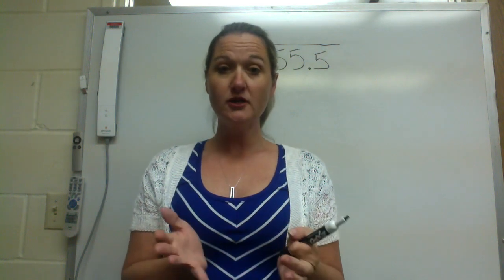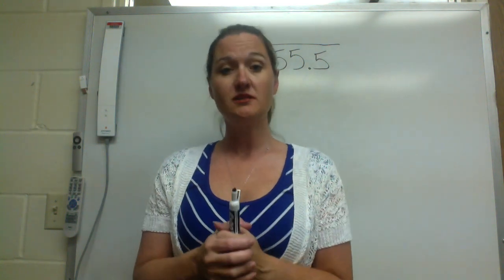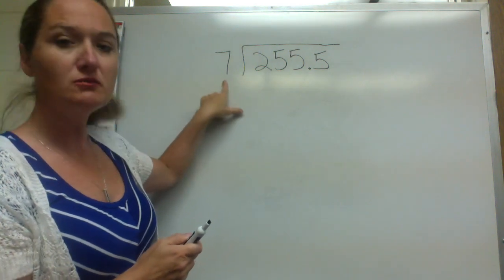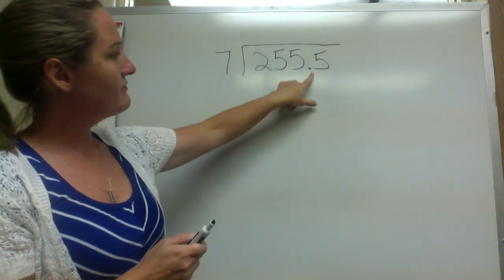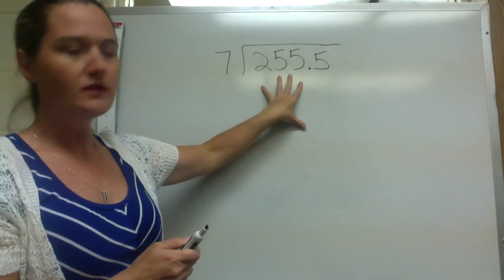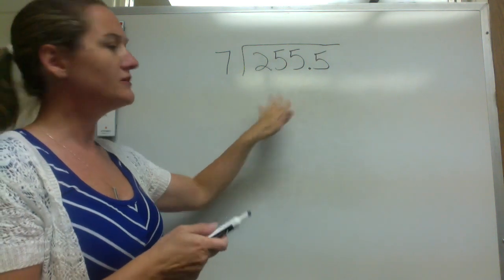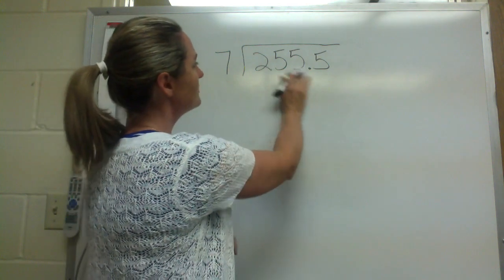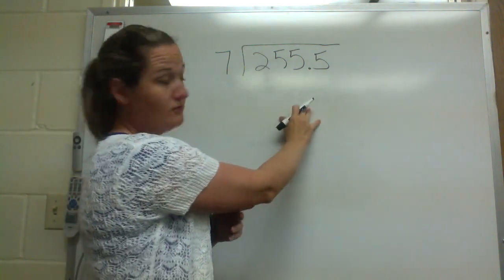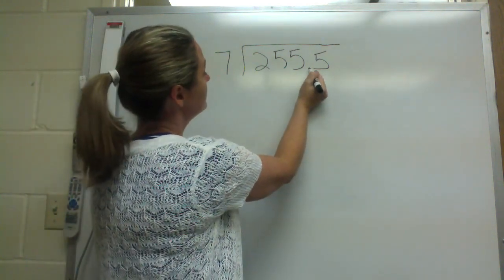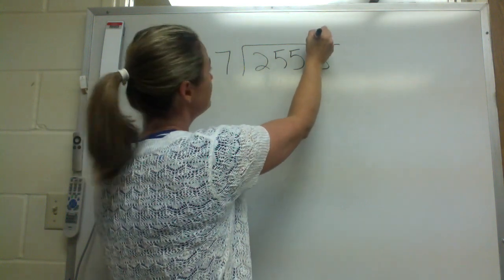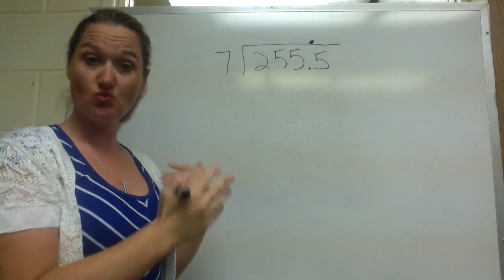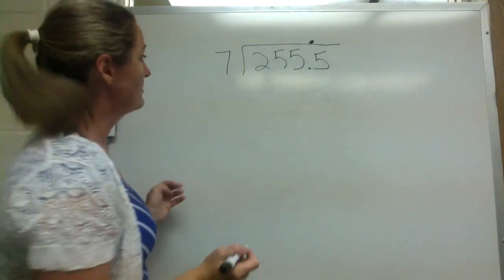Now we're going to talk about dividing with decimals. Here's my first problem — I've got a whole number over here, but then I have a decimal in here. So not really a big deal. All I have to do at this point is, if the decimal is being divided into, I'm going to take this and just move it up here, and then I'm just going to ignore it and work the rest of the problem out.